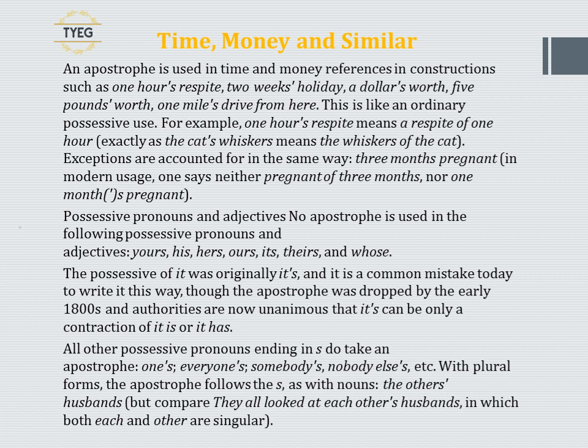The possessive of 'it' was originally 'it's', and it is a common mistake today to write it this way, though the apostrophe was dropped by the early 1800s and authorities are now unanimous that 'it's' can be only a contraction of 'it is' or 'it has'. All other possessive pronouns ending in S do take an apostrophe: one's, everyone's, somebody's, nobody else's, etc. With plural forms, the apostrophe follows the S — as with nouns: 'the others' husbands', but compare 'they all looked at each other's husbands', in which both 'each' and 'other' are singular.